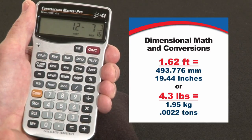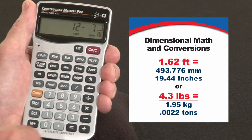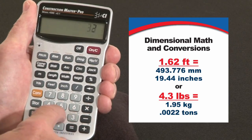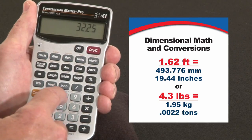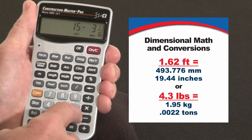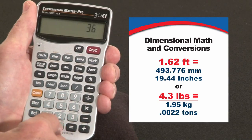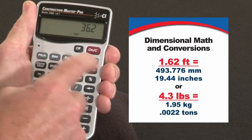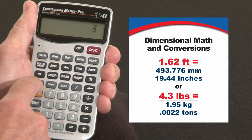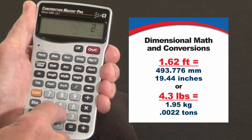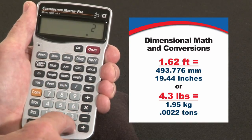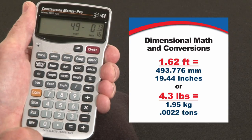Now you're not locked into the feet inch fraction format. You can mix formats together. For instance, plus 32.25 inches plus 36.2 feet minus 3 yards plus 2 meters, just to mix it up. Hit the equal key. It's going to come back in the format we started with, which is feet inch fractions.